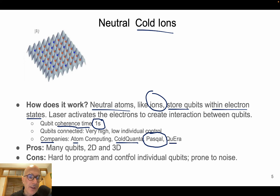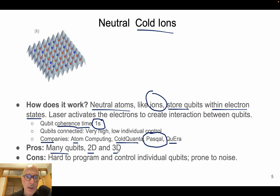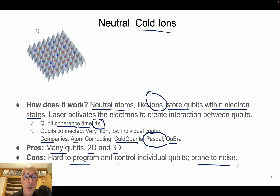The advantage of cold atoms is that we can have many qubits, implementable in different topologies — 2D and 3D. The disadvantages are that cold atom technologies are hard to program when controlling individual qubits, and they tend to be prone to noise.